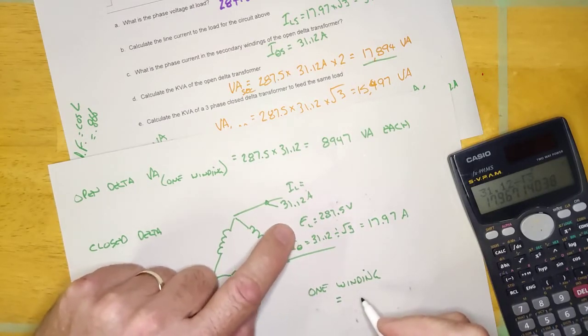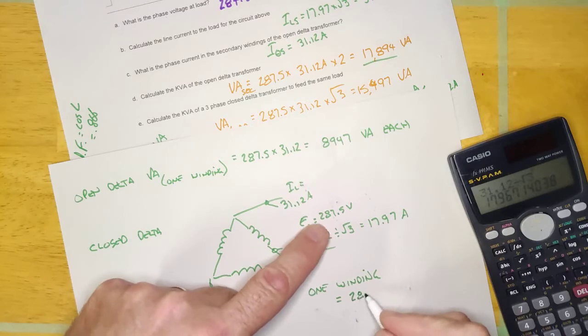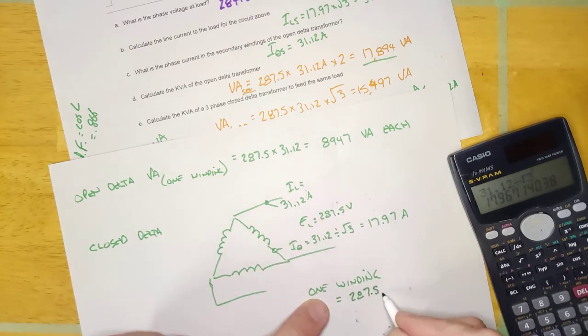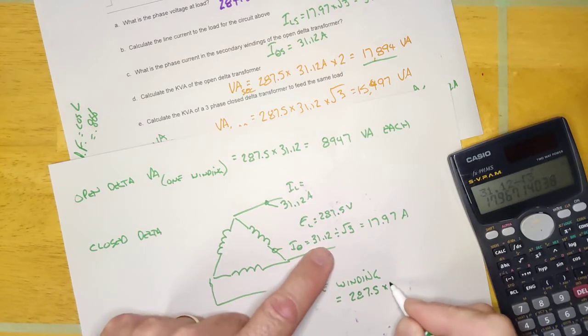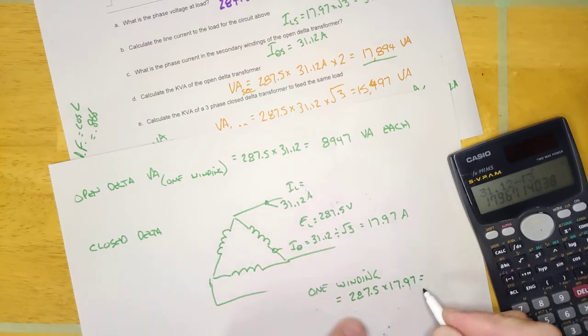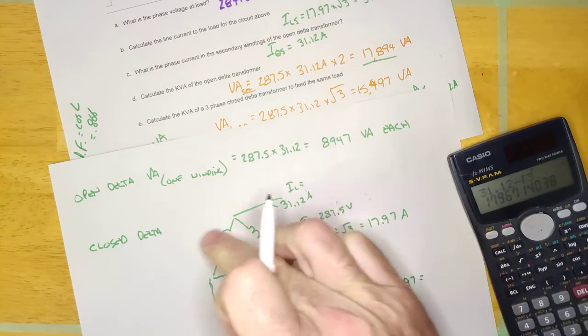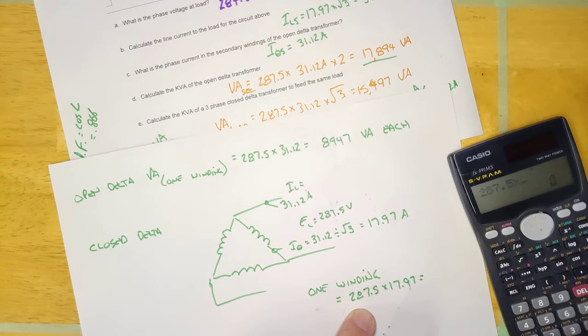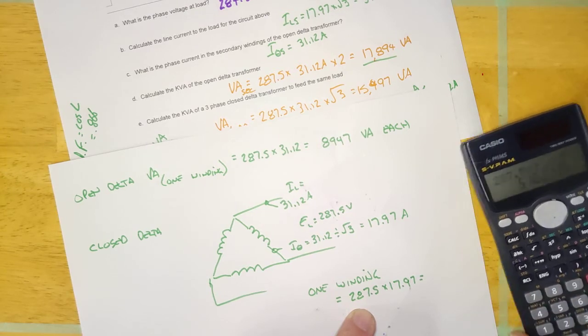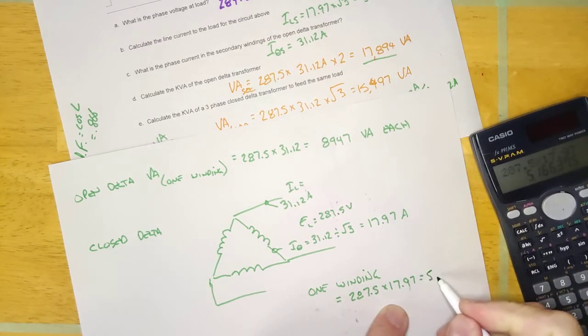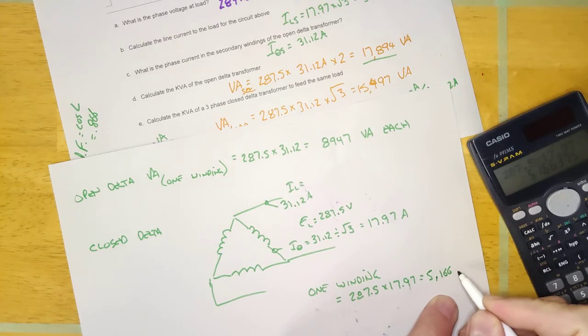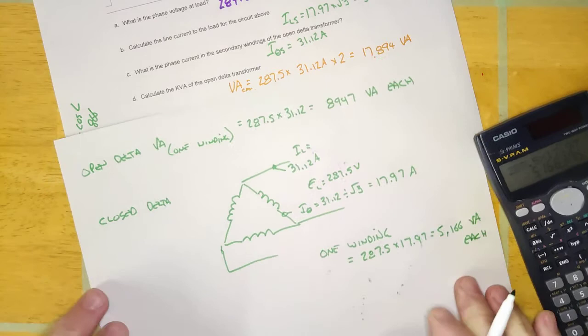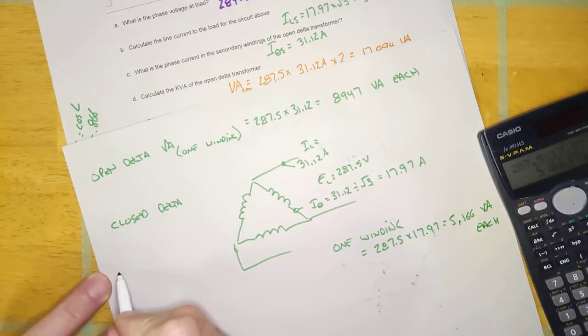And that means one winding of three guys would be E phase times I phase. So it would be E phase, which is 287, I know it says line there but it's also phase, times I phase, 17.97. That's one of three. Okay, so let's do that. 287.5 times 17.97 equals 5,166 VA each.